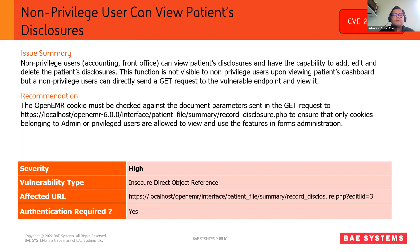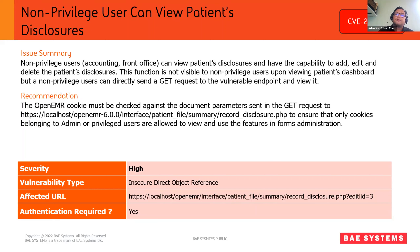Looking at the affected URL, we identified specifically the endpoint: the OpenEMR interface patient file summary record disclosure. This particular URL is submitted in a GET request and requires authentication — meaning you need at least a low-privileged user account. If you know this particular endpoint, all you need to do is plug it into your browser and you should be able to view the patient record. At the end there is a parameter — the edit_lid — which can be manipulated.